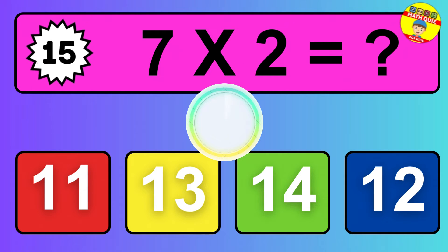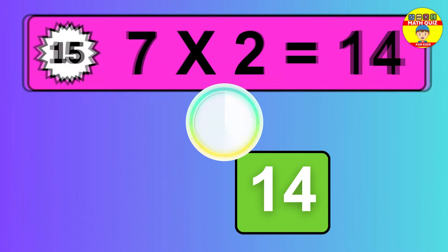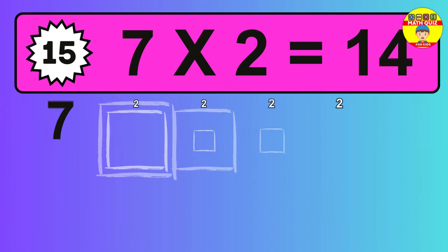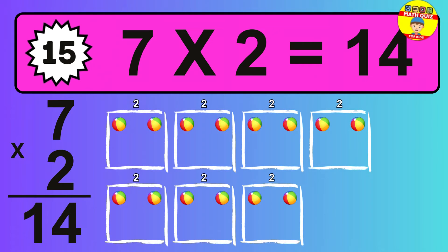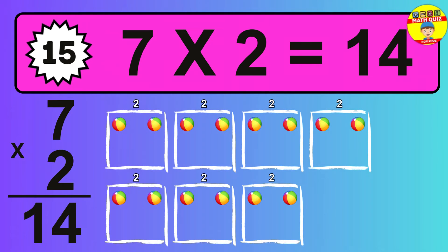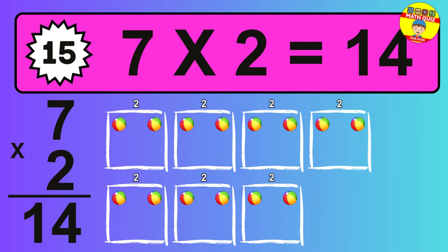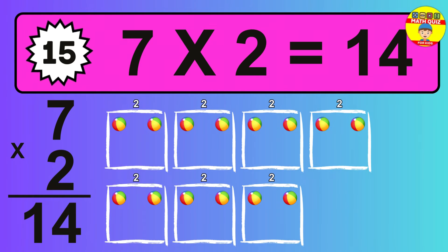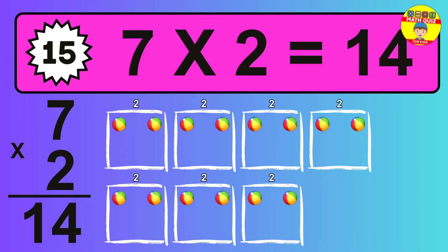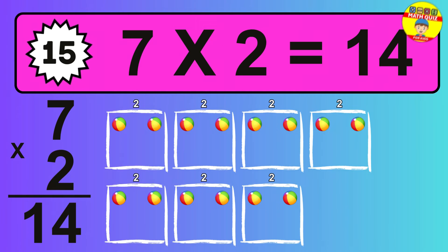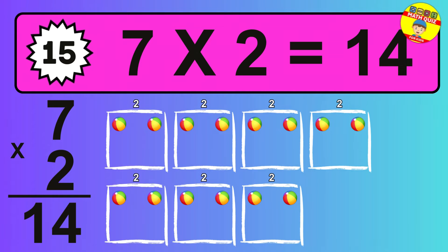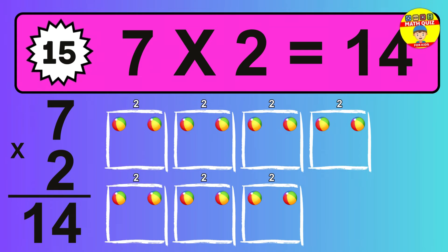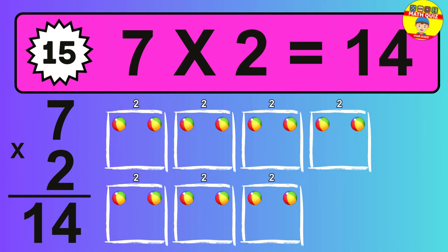Question 15. 7 times 2 equals what? The answer is 7 times 2 is 14. To calculate, we have 7 groups with 2 balls each one. So, how many balls do we have? 14 balls.